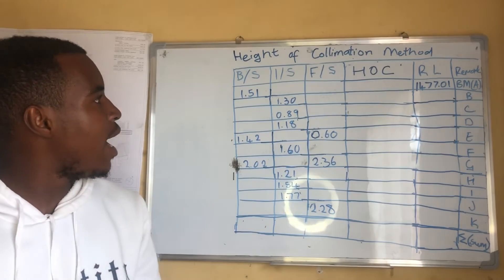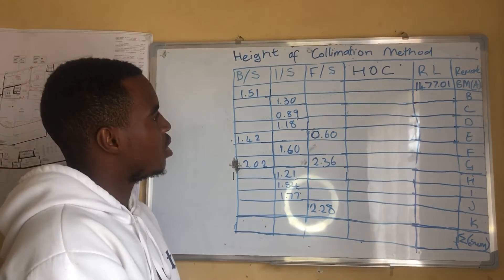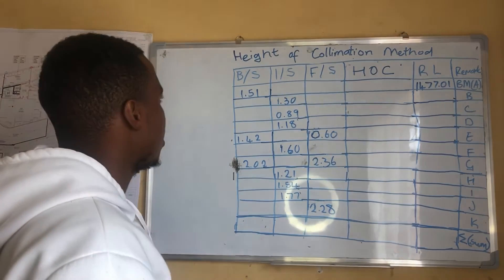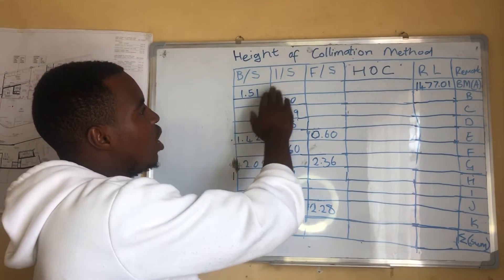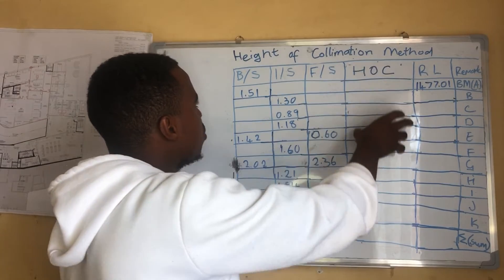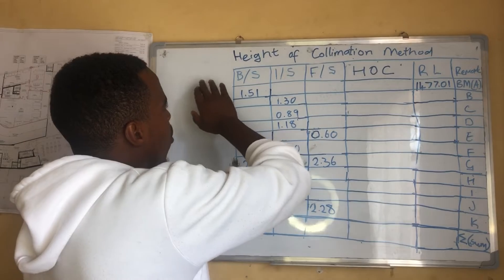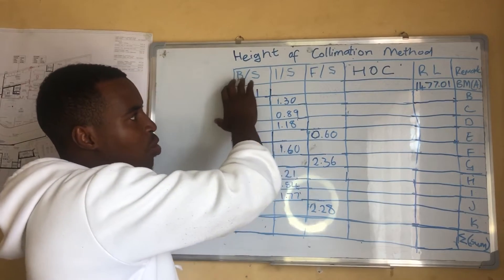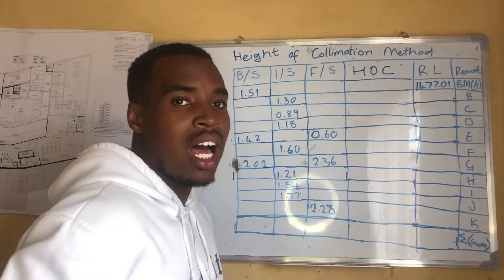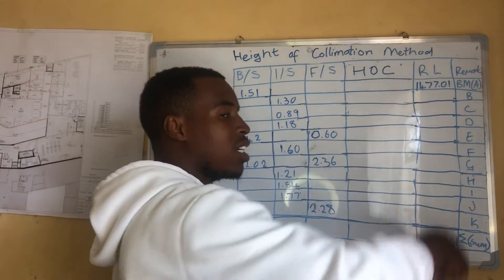In the Height of Collimation method our table is a bit different — not that much — but it has some smaller adjustments. Again we have our backsight, our intermediate sight, our foresight, and now we have a column which we call Height of Collimation, which is where this method gets its name.